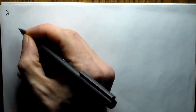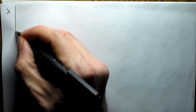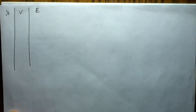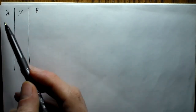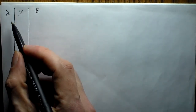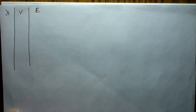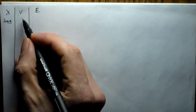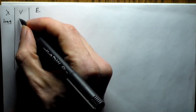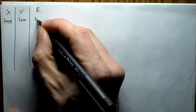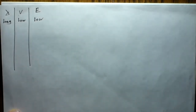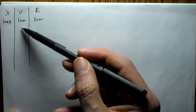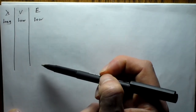Here we have wavelength, frequency, and energy. We're arranging this from long wavelengths and low frequencies and low energies, going toward short wavelengths, high frequencies, and high energies.